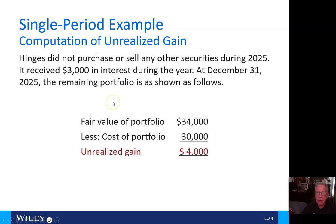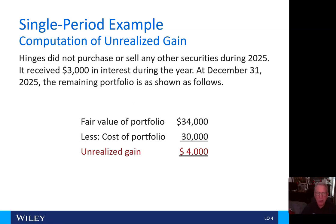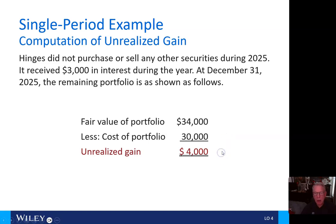So how do we compute the unrealized gain? Hinges did not purchase or sell any other securities during 2025. It received $3,000 in interest during the year. At December 31, 2025, the remaining portfolio was shown. The fair value of the portfolio was $34,000 less the cost of $30,000, leaving us with an unrealized gain of $4,000.